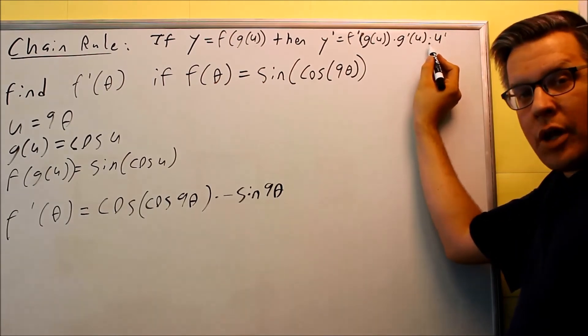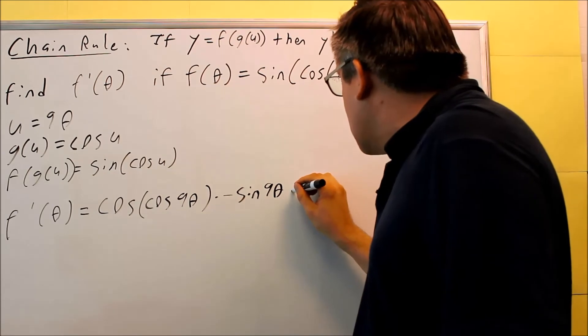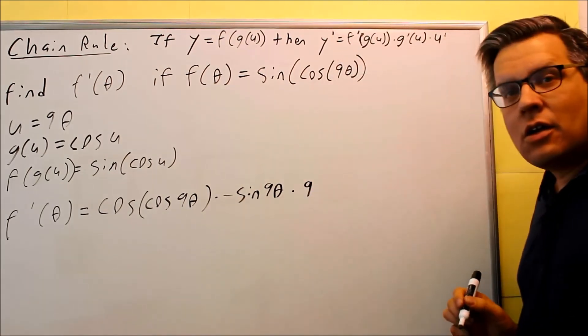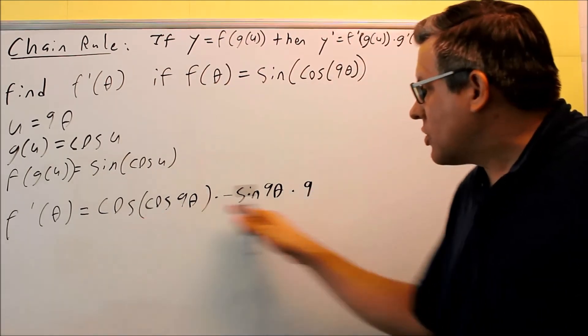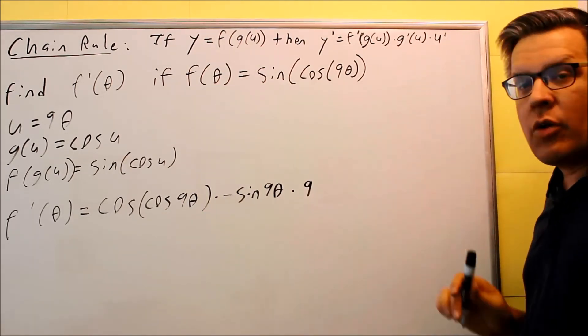Then, the very last part says we're going to multiply it by the derivative of u. u is 9θ, so we're going to multiply this by 9. So this is your whole derivative. Here's the three different parts that we're multiplying together that follow the formula that we have there.